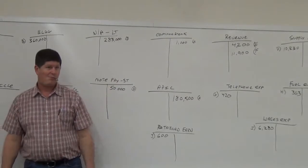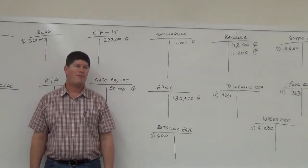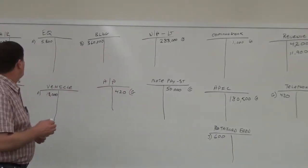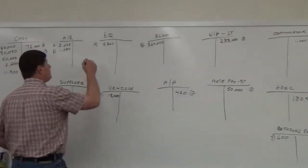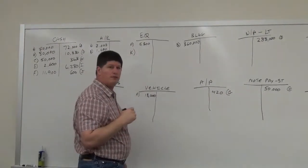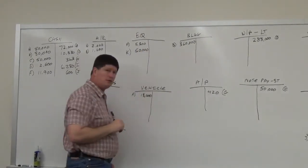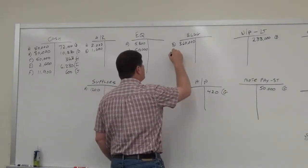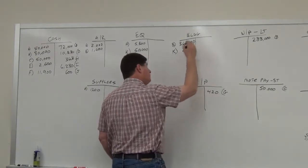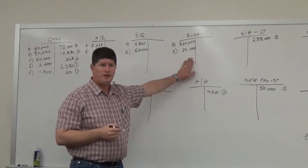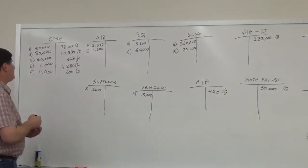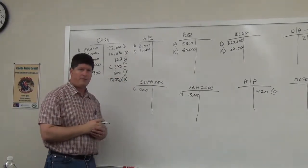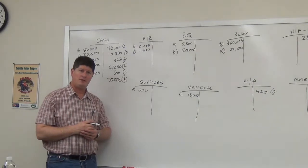Item K: Purchased $50,000 of equipment, and renovated and decorated the new store for $20,000 added to the cost of the building. Equipment is an asset — debit $50,000. The $20,000 renovation is added to the building — debit $20,000. Total debits are $70,000. We paid for it all in cash — cash decreases by $70,000 credit.